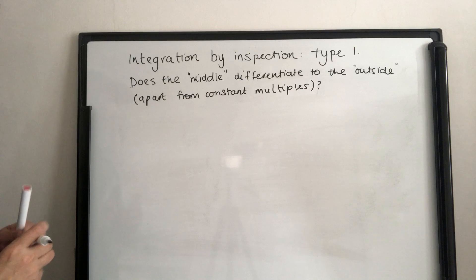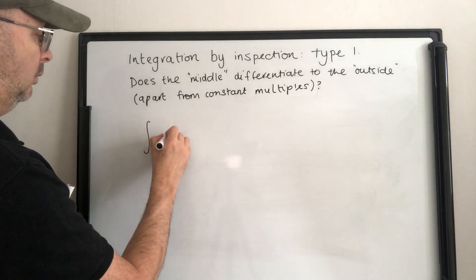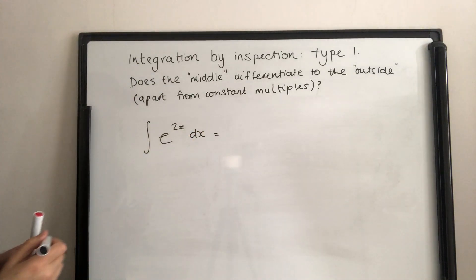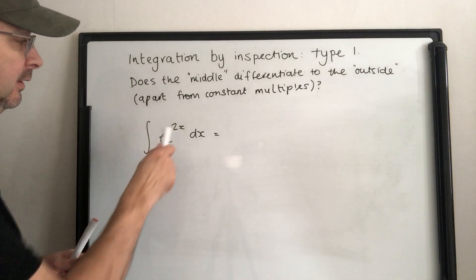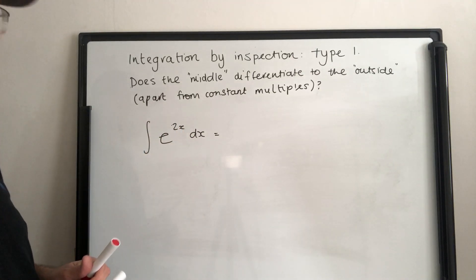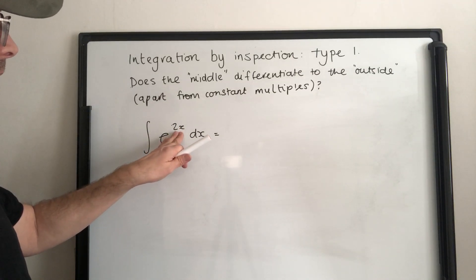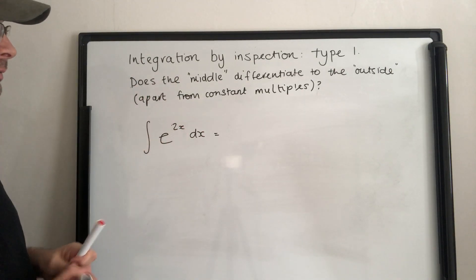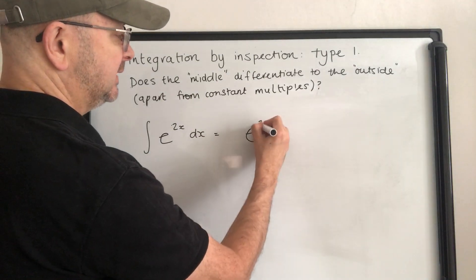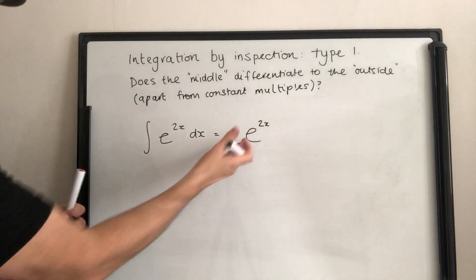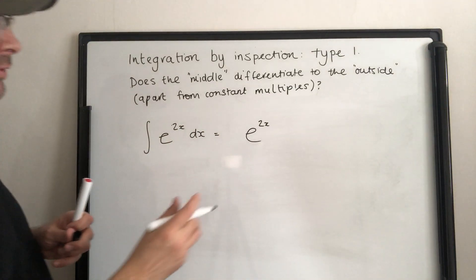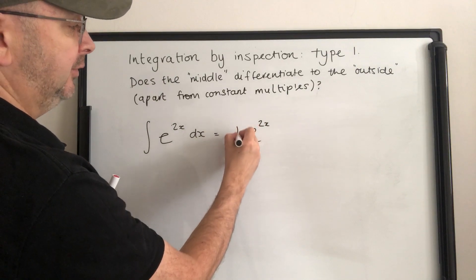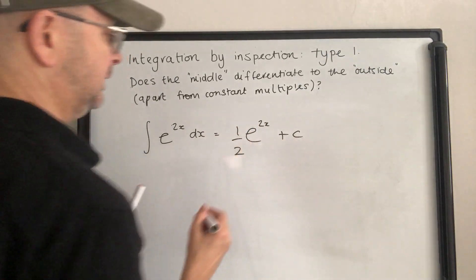We can take this further. If we've got e to the 2x, the 2x is the middle and it differentiates to 2, which I can adjust for as a constant multiple. So this is going to be e to the 2x. If I differentiate that it would be e to the 2x times 2, but I don't want the 2 there. So the answer is one half e to the 2x plus c.